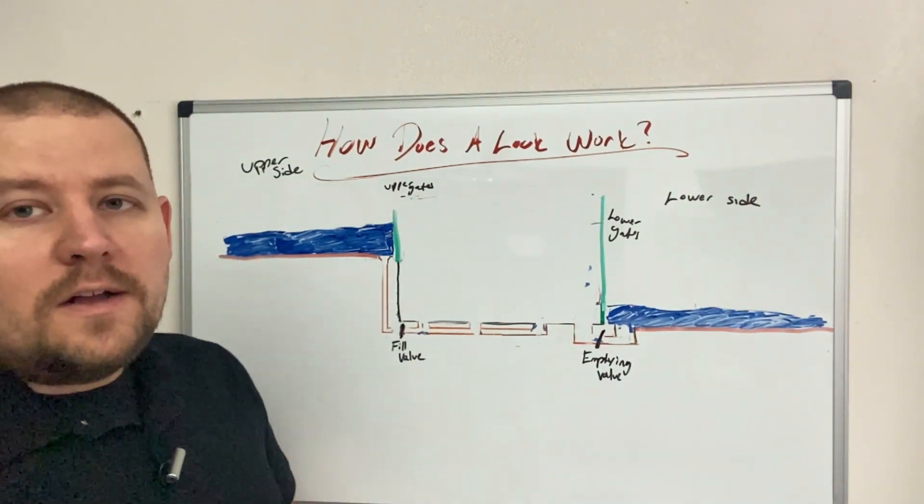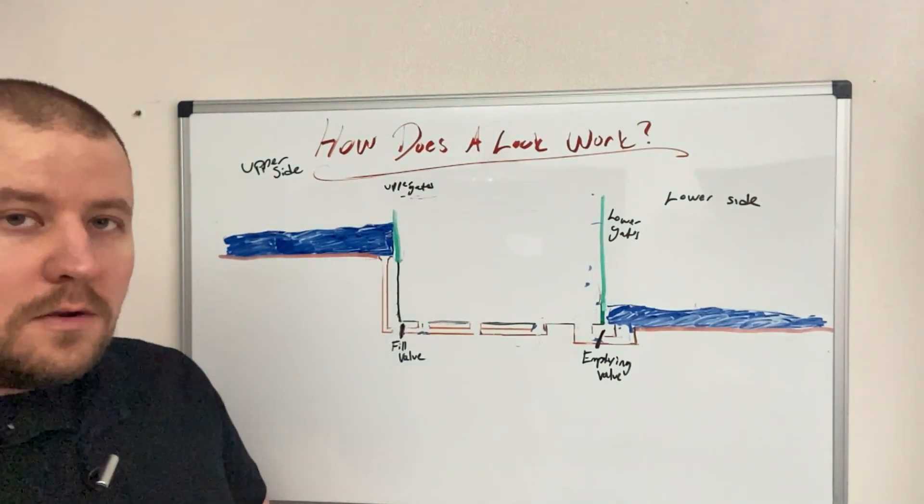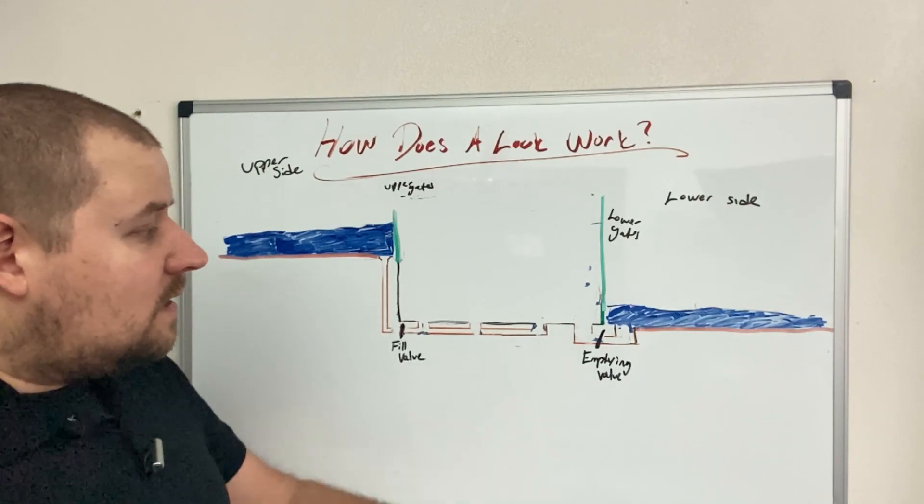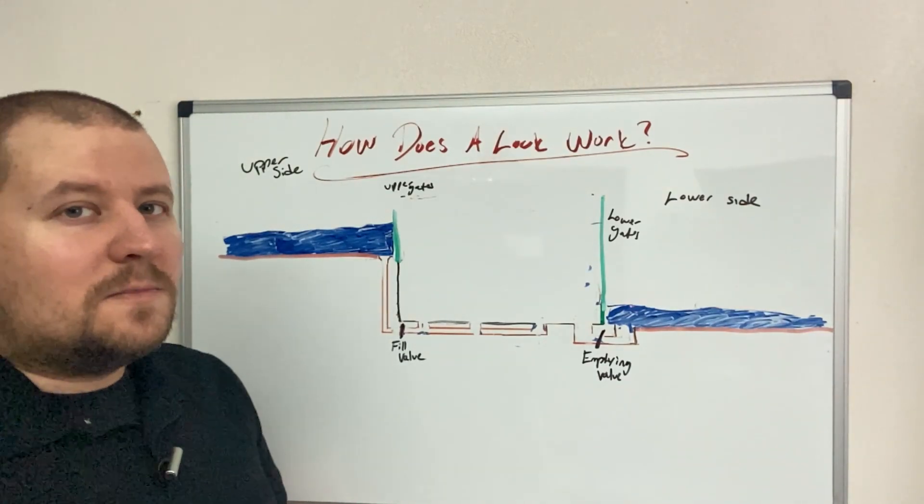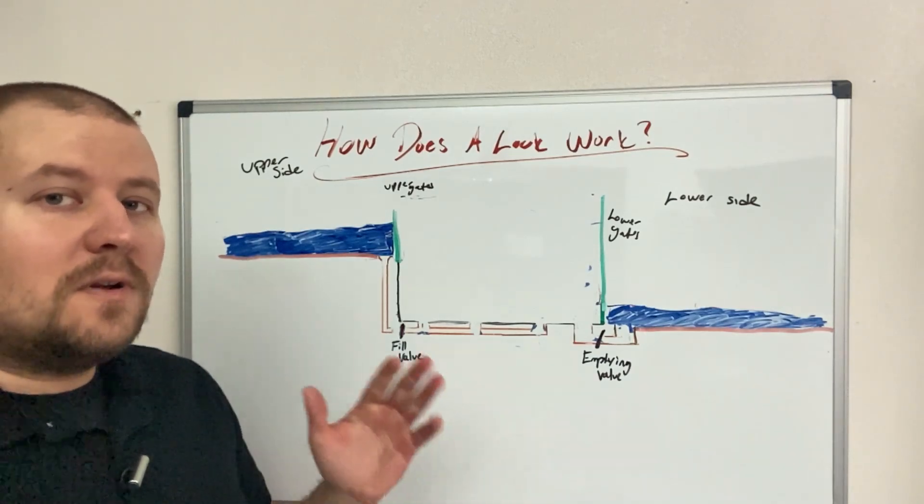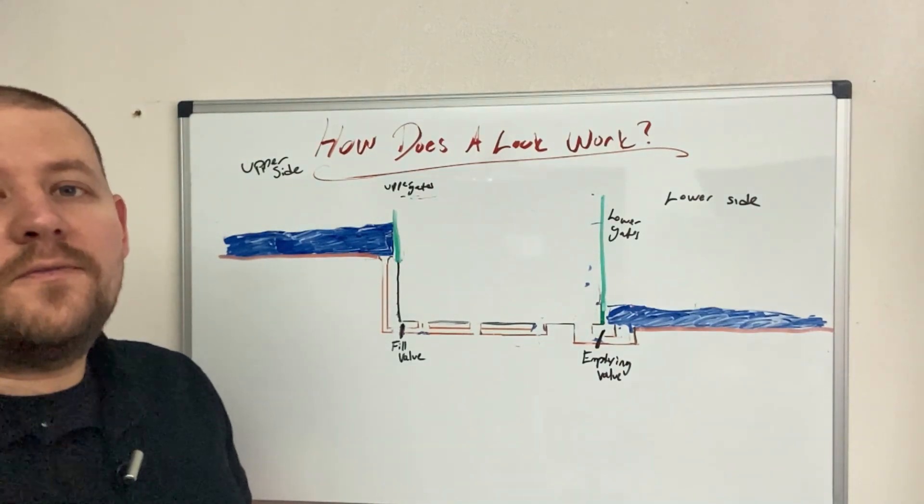And the use of the different valves and opening the gates is not that big of a drain on power either. The gates generally run on a hydraulic ram, and I believe the valves do too. To keep the rivers navigable, you can see that this is actually a super efficient design. And what's incredible about it is that it was designed in the early 1900s or even before.